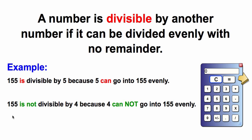155 is not divisible by 4 because 4 cannot go into 155 evenly. If we check 155 divided by 4, there's going to be a remainder or a decimal. So since 4 cannot go evenly into 155, we say that it is not divisible.